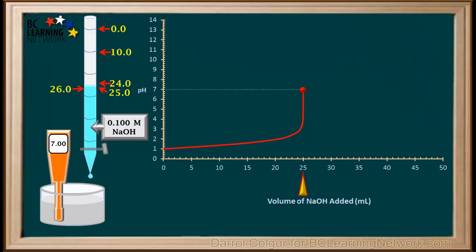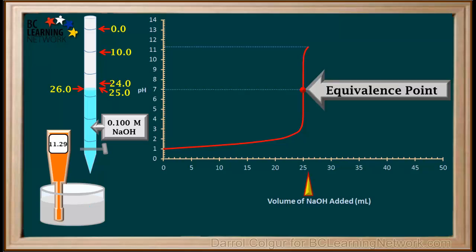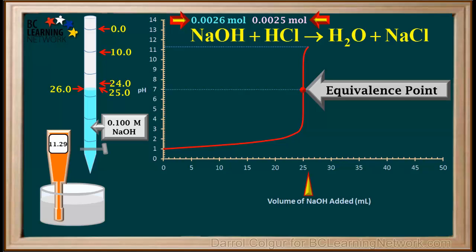That's why the pH at the equivalence point of all strong acid-strong base titrations is 7. After the equivalence point, we'll slowly add just one more milliliter of NaOH to give a total of 26 milliliters. Notice how quickly the pH increases — it went from 7 all the way up to 11.29 with the addition of just 1 milliliter of NaOH. At the 26 milliliter mark, 0.0026 moles of NaOH have been added to 0.0025 moles of HCl, so the base NaOH is now in excess and the pH is above 7.